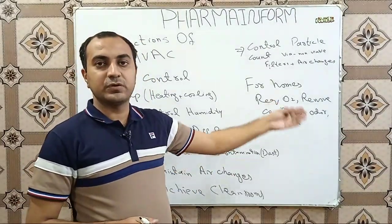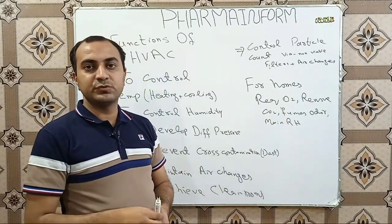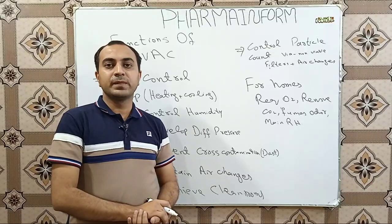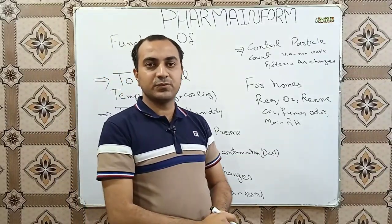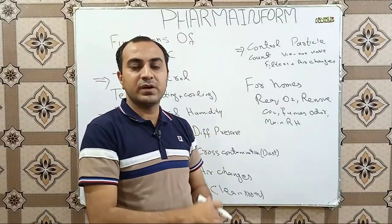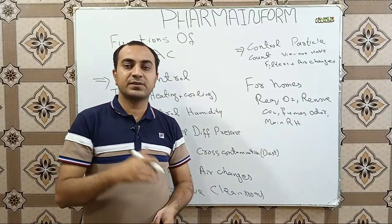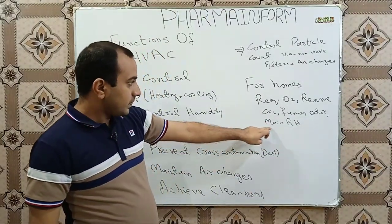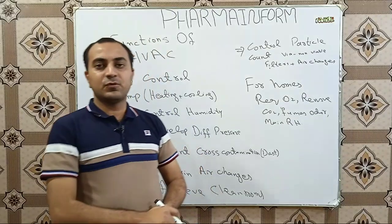Now we will discuss the functions of HVAC for normal homes or living buildings. For homes or living buildings, the HVAC system is used to provide environmental comfort for residents. It controls the temperature and humidity of the building and supplies fresh air to residents. It provides the required level of oxygen, removes carbon dioxide from the building, removes excess humidity or fumes from kitchens, and removes odor or smell from rooms.